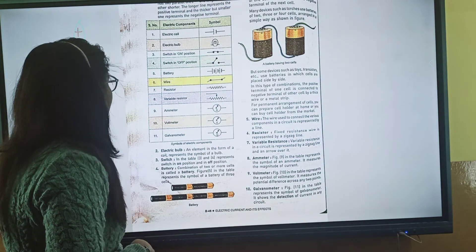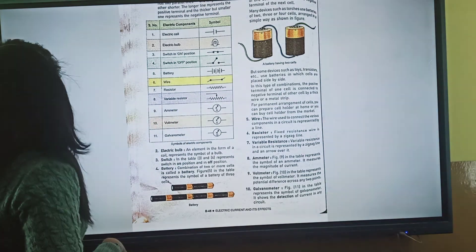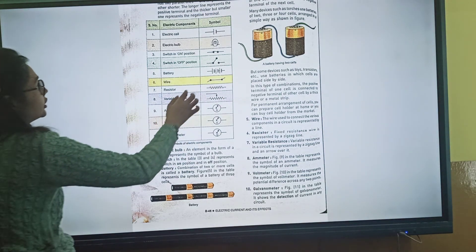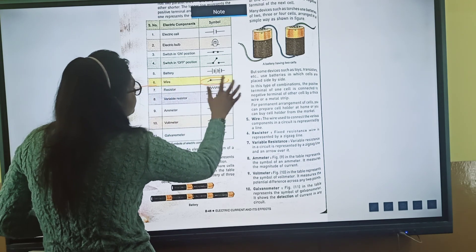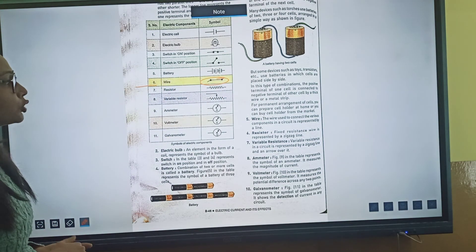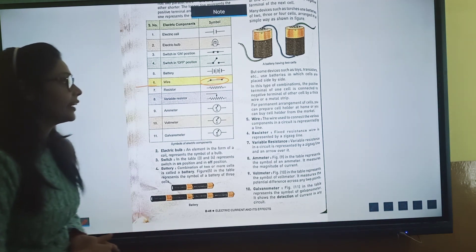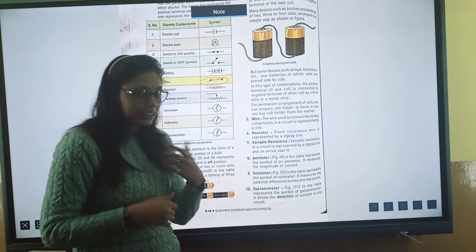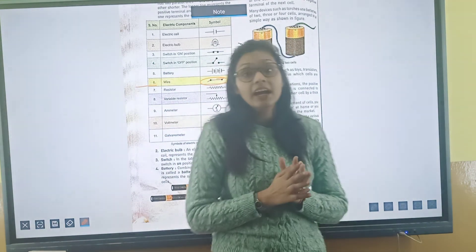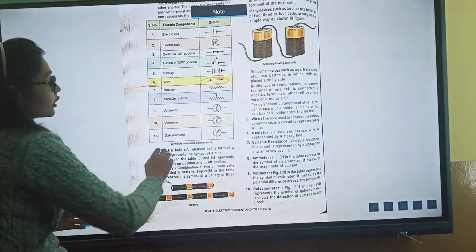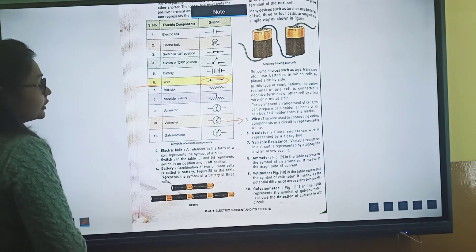Next is the wire. Wire is shown as a single straight line. The wire used to connect the various components in a circuit is represented by a line. Without wire, the circuit is incomplete, so wire plays the most important role in a circuit.